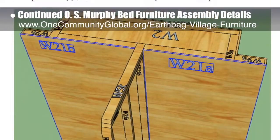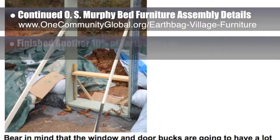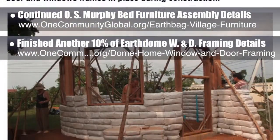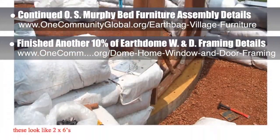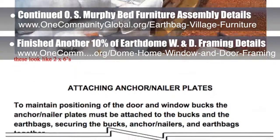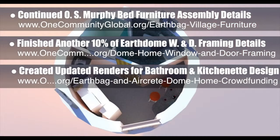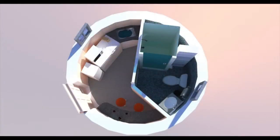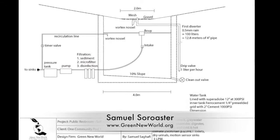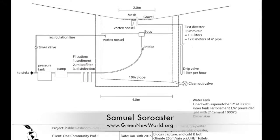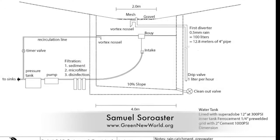We estimate we are now 35% complete with what is needed for the website. Also behind the scenes, we finished another 10% of the Earth Dome window and door framing reformatting details needed before moving these specifics to the website. This brings us to 45% complete with this work. We also created these updated renders of the bathroom and kitchenette design for the 150-foot diameter dome for the upcoming crowdfunding campaign. Samuel Serroester, permaculturist and sustainable designer from Green New World, created this schematic of the proposed rainwater catchment plans for updating two of the four toilet domes in the Earth Bag Village.